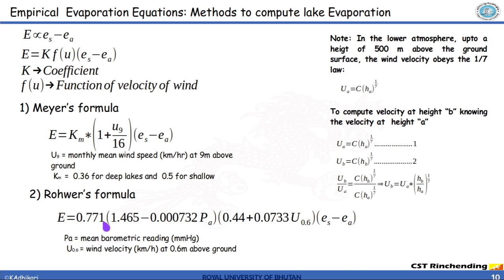Notice that the velocity is in kilometer per hour at 0.6 meter above the lake surface or the ground surface. Whereas in Mayer's formula, it is at a height of 9 meter from the ground surface or the lake surface.